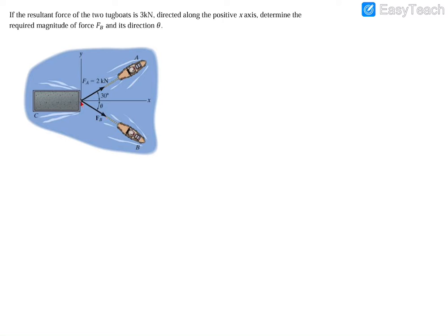Then conversely, we have boat B pulling this load at some unknown force, which is FB, and that's going to be some sort of angle below the horizontal called theta.